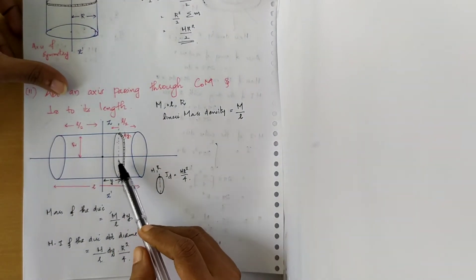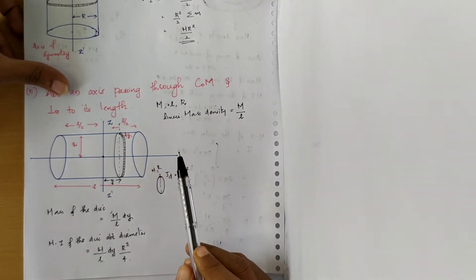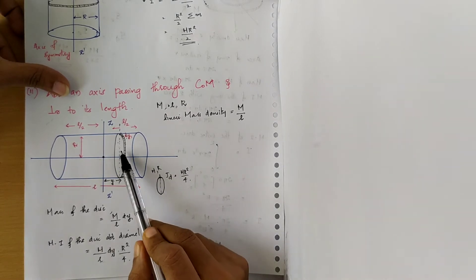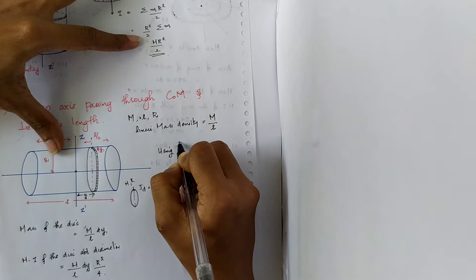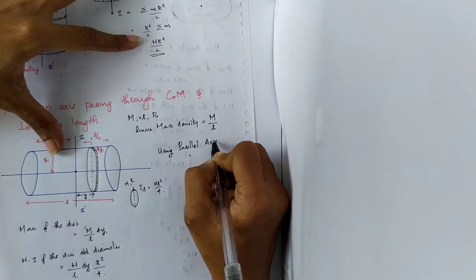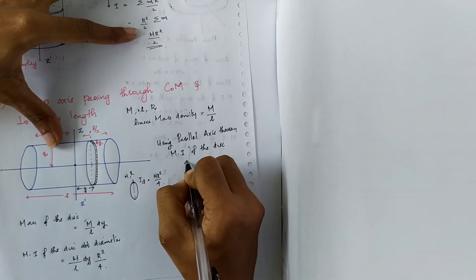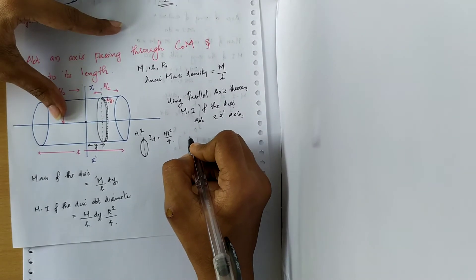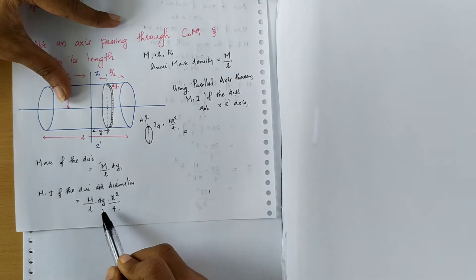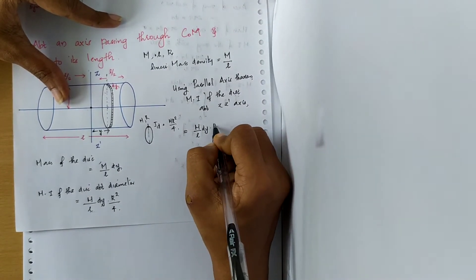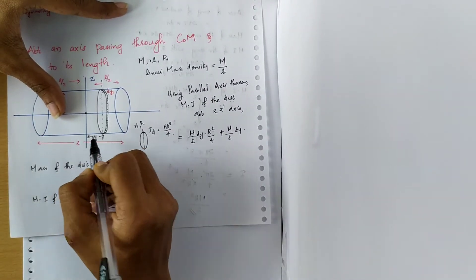Since this axis passes through the center of the disc and is parallel to the ZZ prime axis which passes through the center of mass of the cylinder, we can use the parallel axis theorem. Using the parallel axis theorem, the moment of inertia of the disc about ZZ prime equals (M/L · dy · R²/4) plus the mass of the disc (M/L · dy) times the distance squared, which is y².